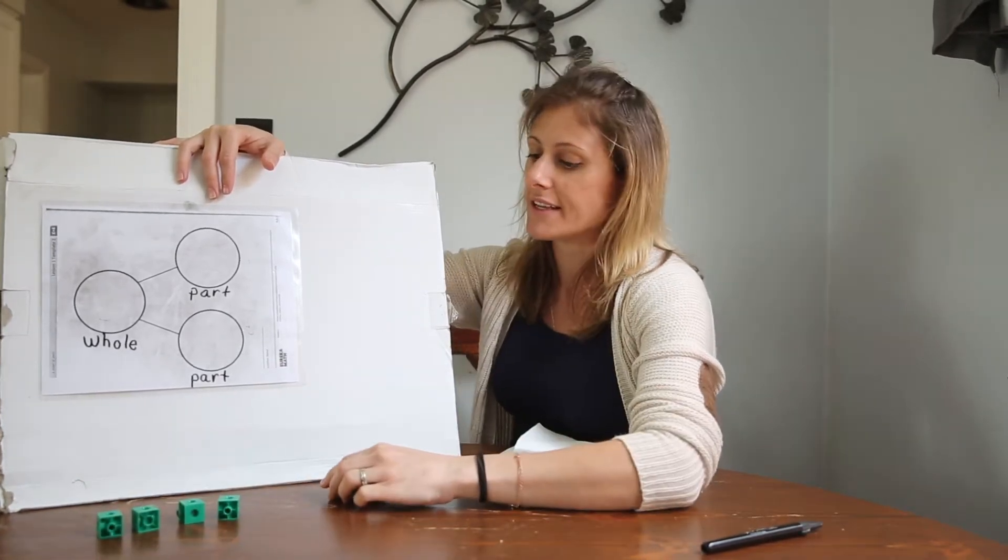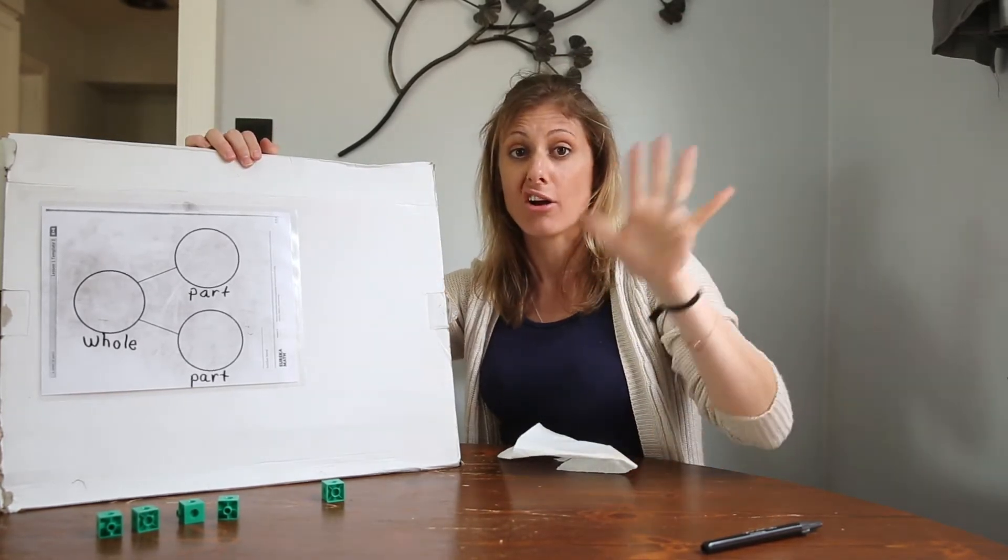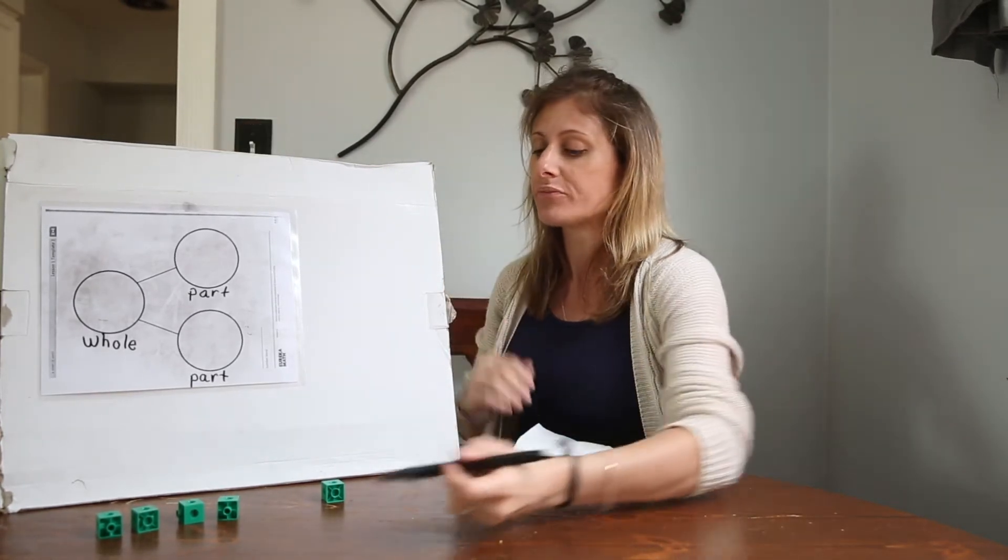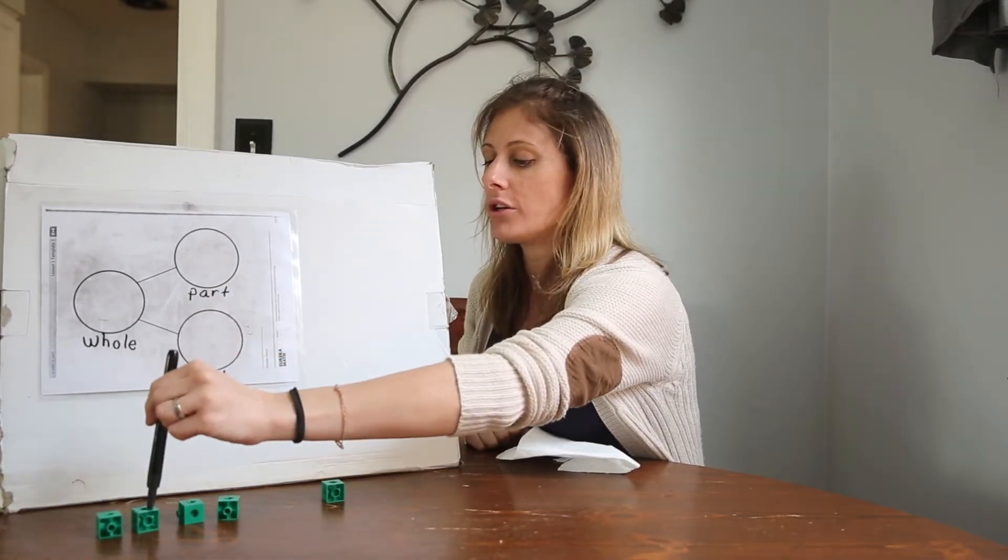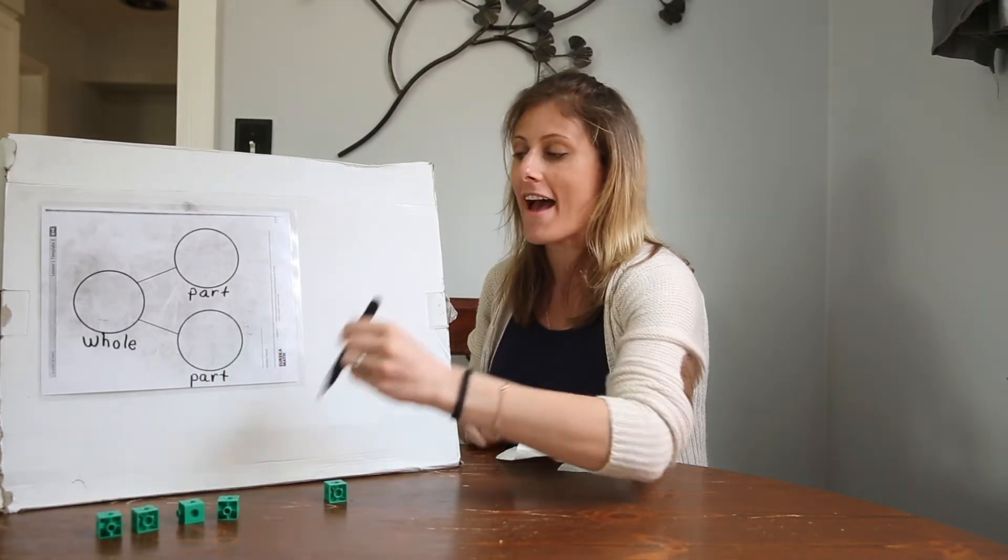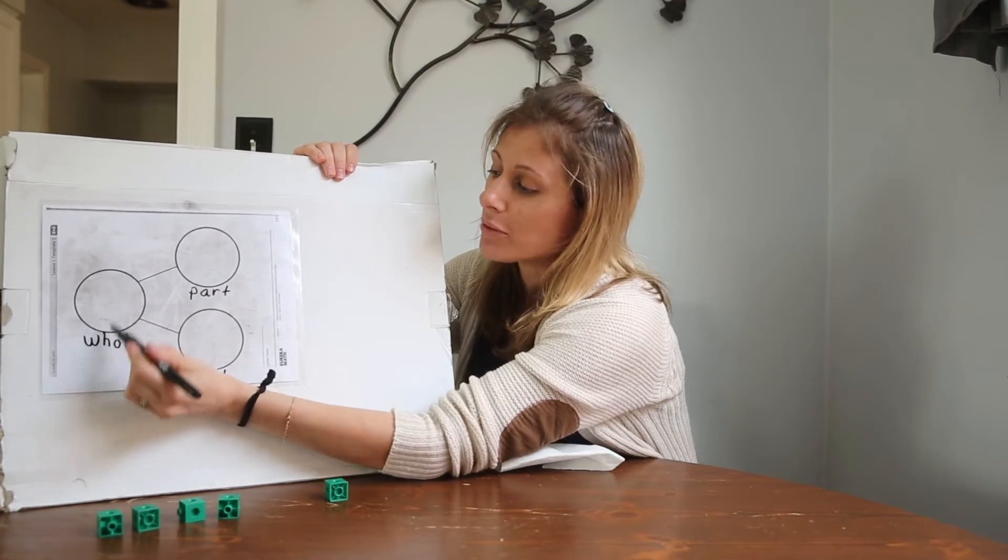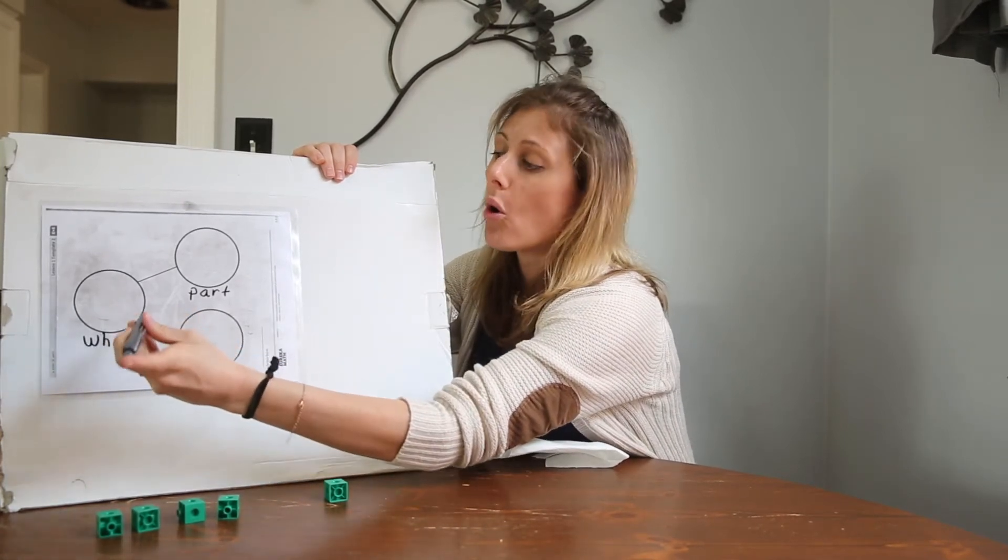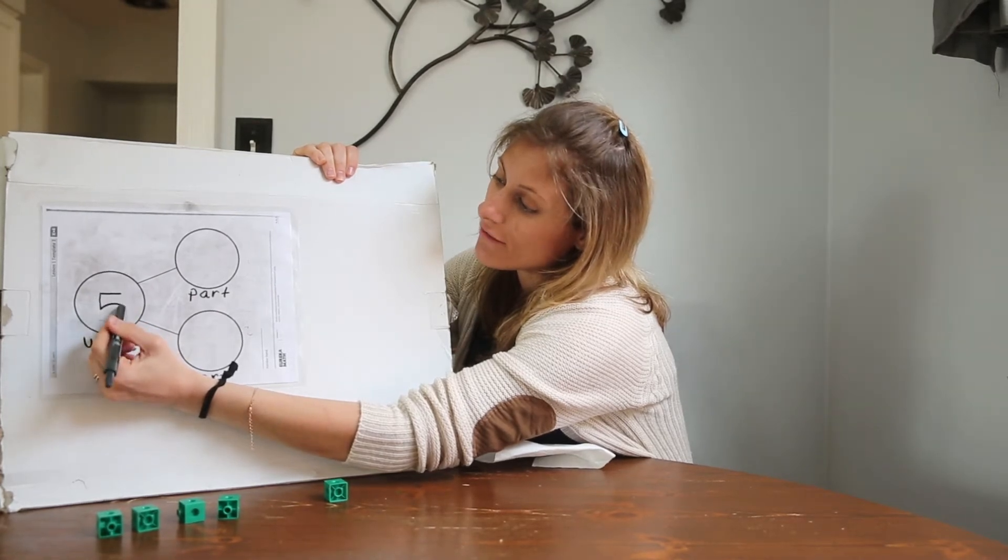Here's one part and here's another part. And now I'm gonna count them. Let's see. First I'm gonna count how many I have all together or my whole. Count with me. One, two, three, four, five. I have five cubes and I'm gonna put that in my whole part of the number bond.